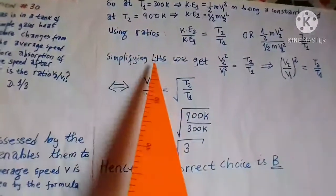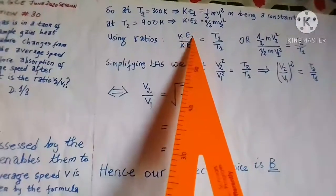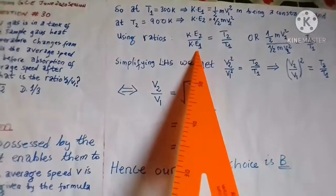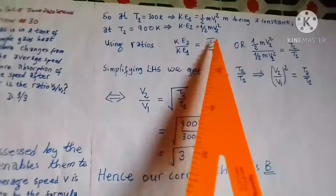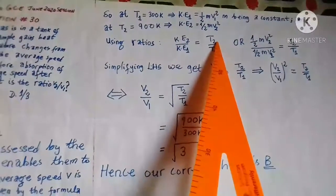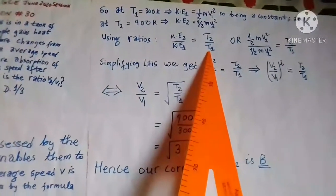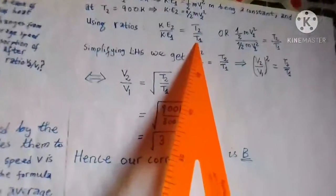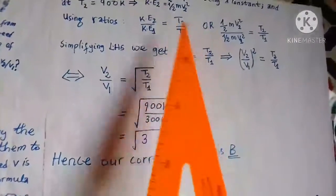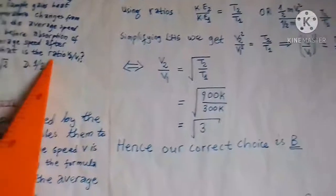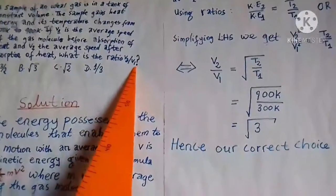Now if we make use of ratio, we are going to have kinetic energy 2 divided by kinetic energy 1 equal to temperature 2 divided by temperature 1, because we have been asked to calculate this ratio V2 over V1.